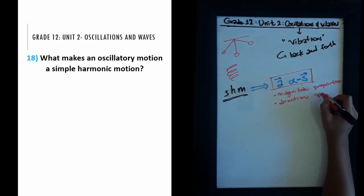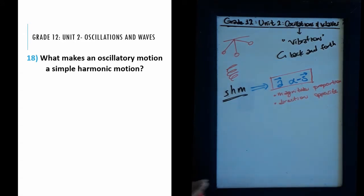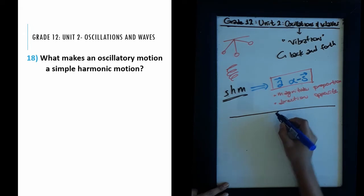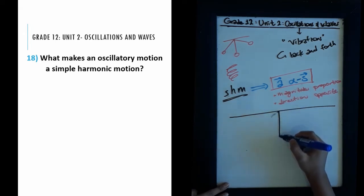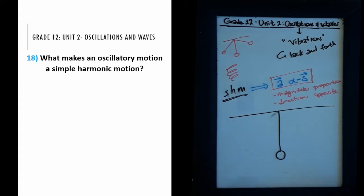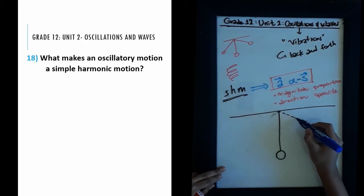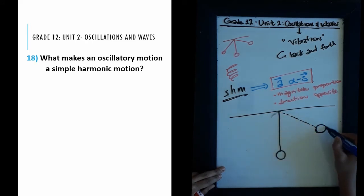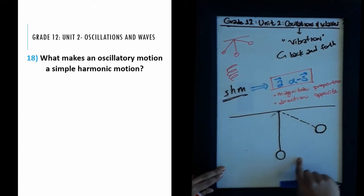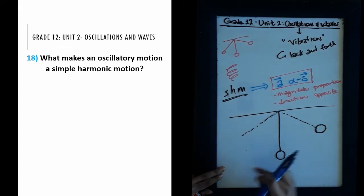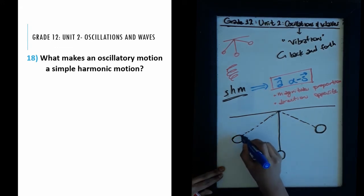Let's see how this is true using a pendulum as an example of simple harmonic motion. A pendulum starts at the equilibrium point when it's not moved. If you lift and displace the pendulum to some point, and then release it, it will accelerate back, go past the equilibrium point, and reach an equal distance on the other side.